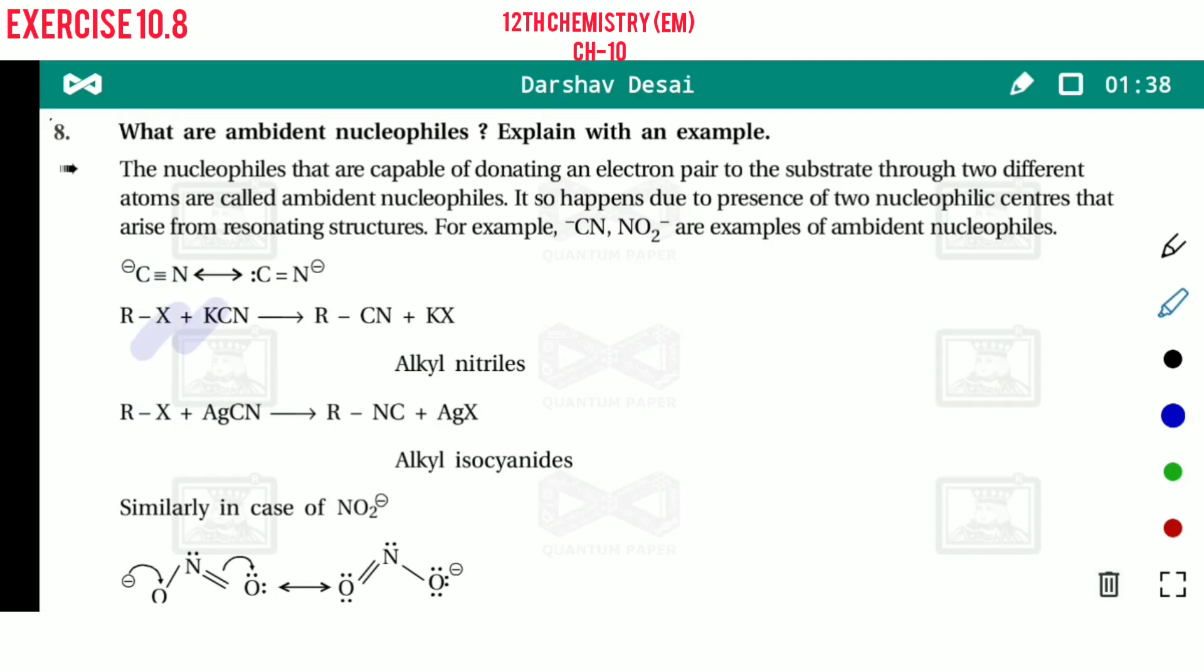If carbon acts as a nucleophile, then alkyl nitriles are formed. Alkyl nitriles, it is called alkyl nitriles, R-CN.